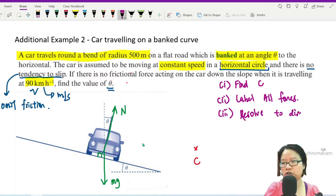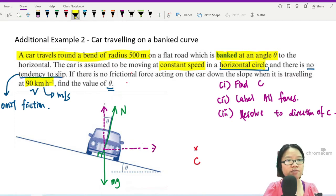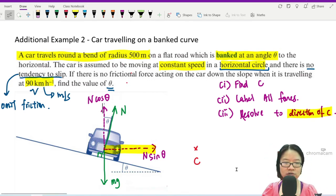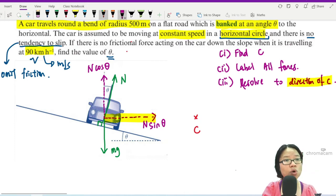Now I'll do step three: resolve to the direction of C. Let's resolve, so we have one component in this direction and the other component in this direction. The force that is in the direction of C, this force doesn't have an angle, so this will be N sin θ. Step four: the unbalanced net force equals resultant force.